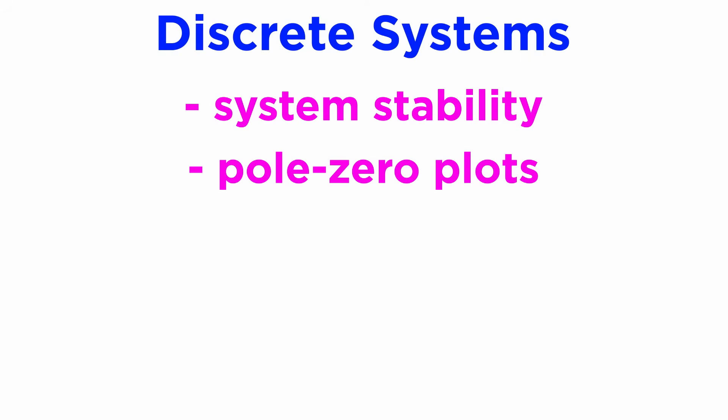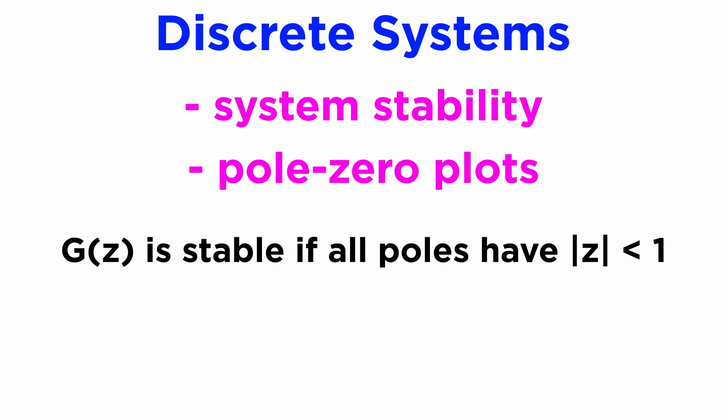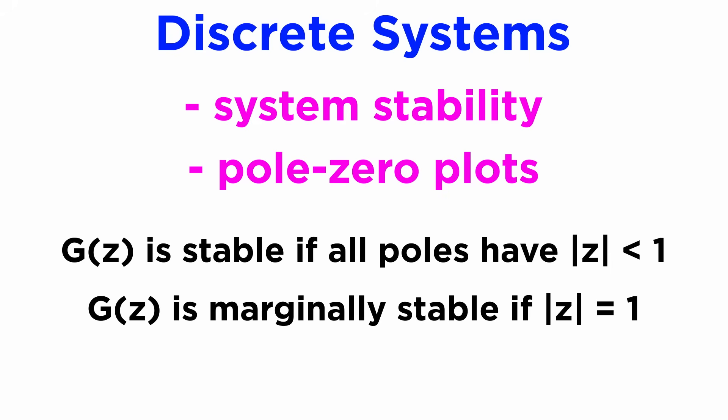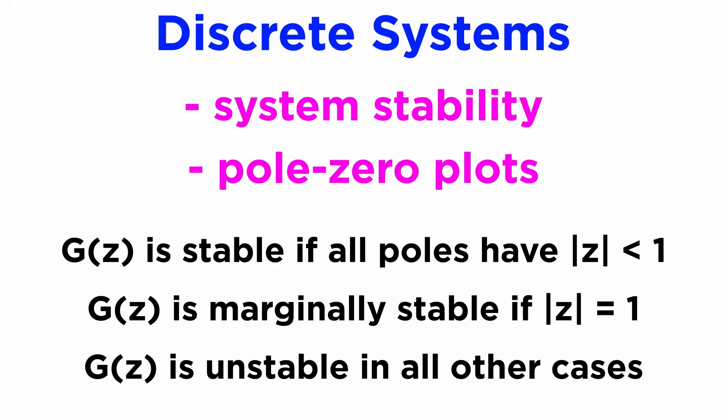Many of the concepts that we discussed in the Laplace transforms tutorials, like system stability and pole zero plots, also have very similar notions for discrete systems. For the pole zero plot of a function in the z domain, a pole is stable if its magnitude is less than 1, meaning it lies within the unit circle, and marginally stable if it lies on the unit circle's circumference and is not repeated. Otherwise it is unstable.